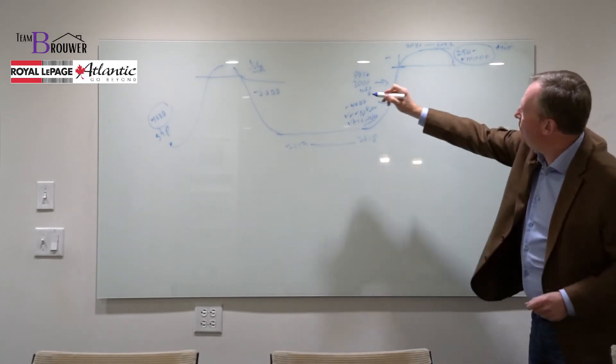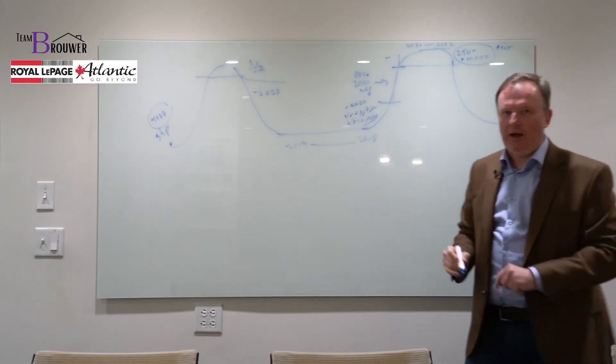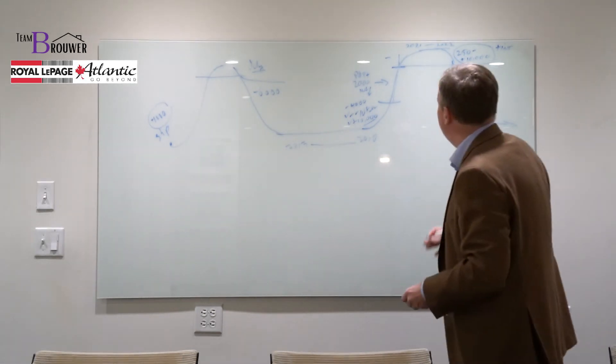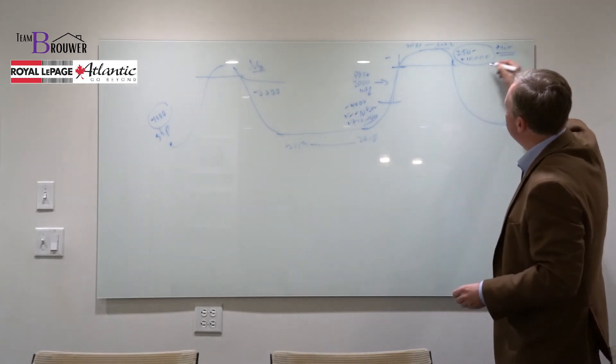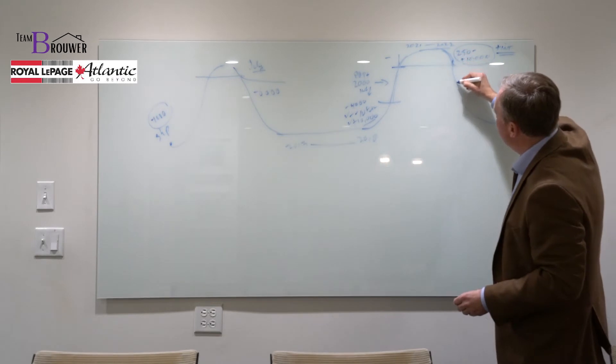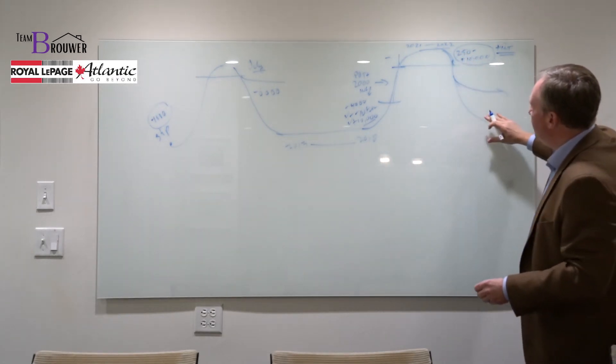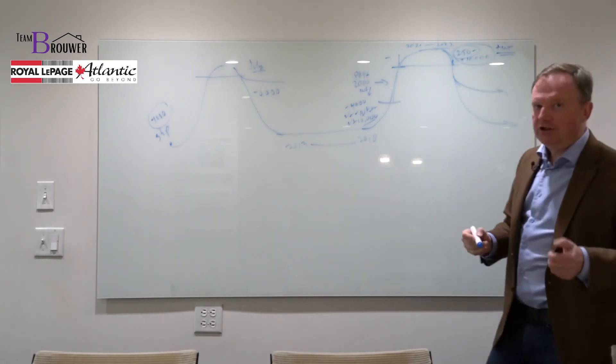So does that curve go traditionally the way it goes down? None of us know and if anybody tells you that, look, they're predicting something that nobody can predict. The reality is though, with higher interest rates we start working downwards on this curve. Whether this curve is relatively flat or steep, that's really dependent on the level of inventory which is still at record lows.